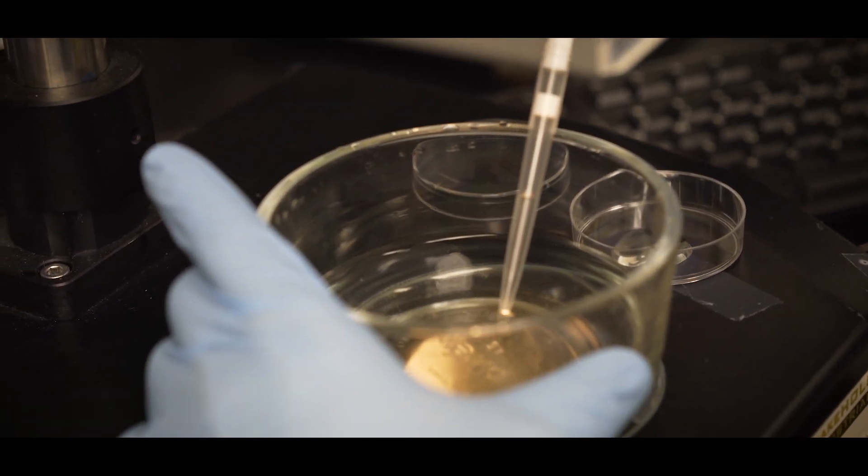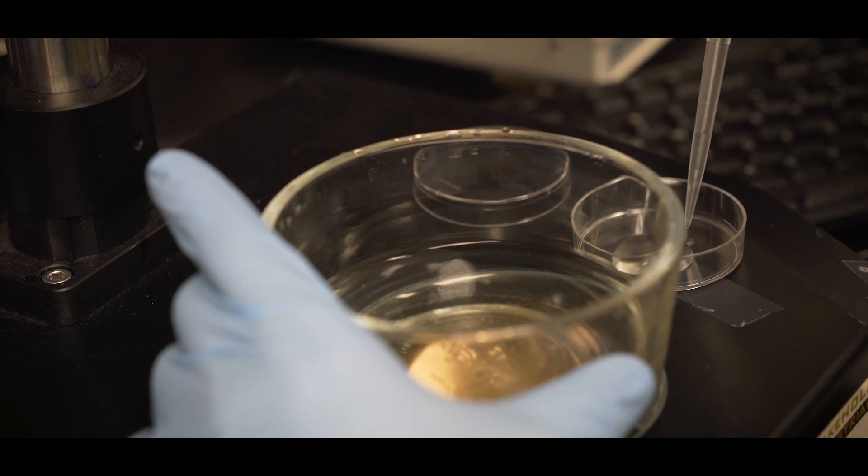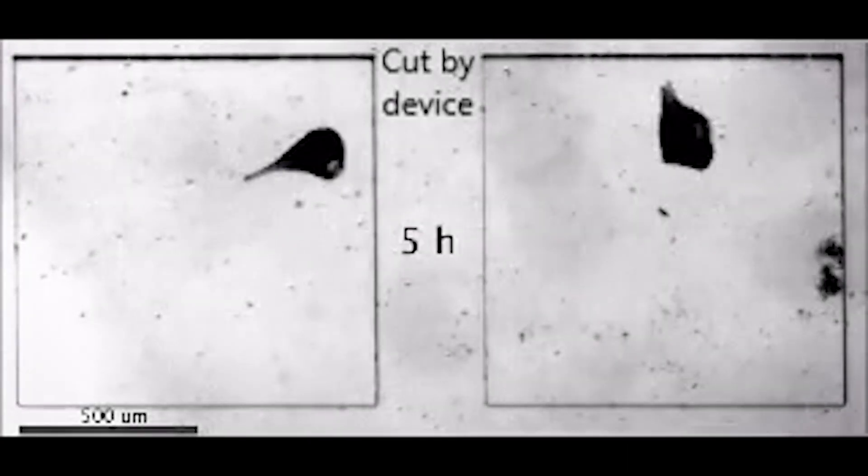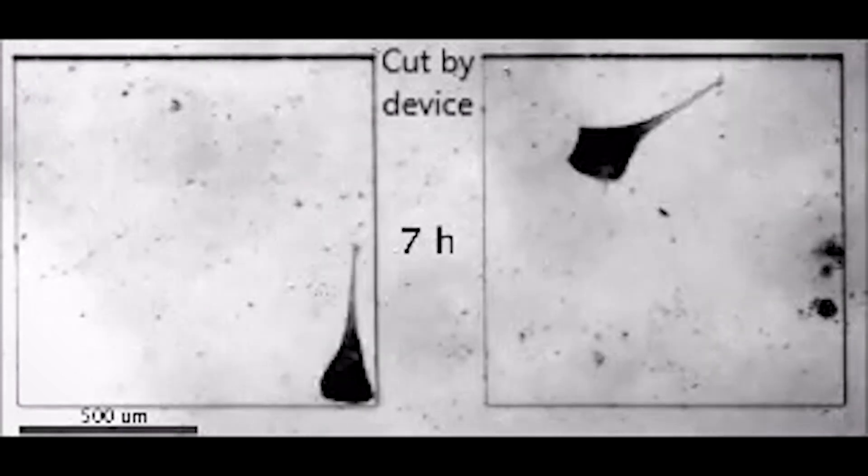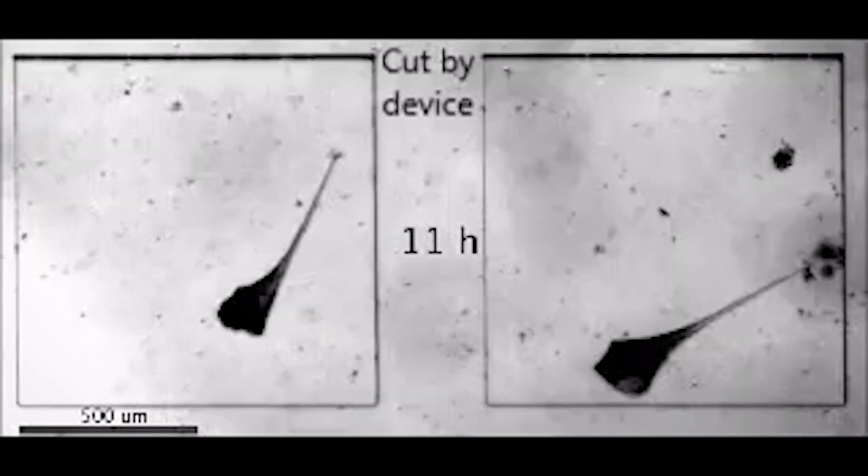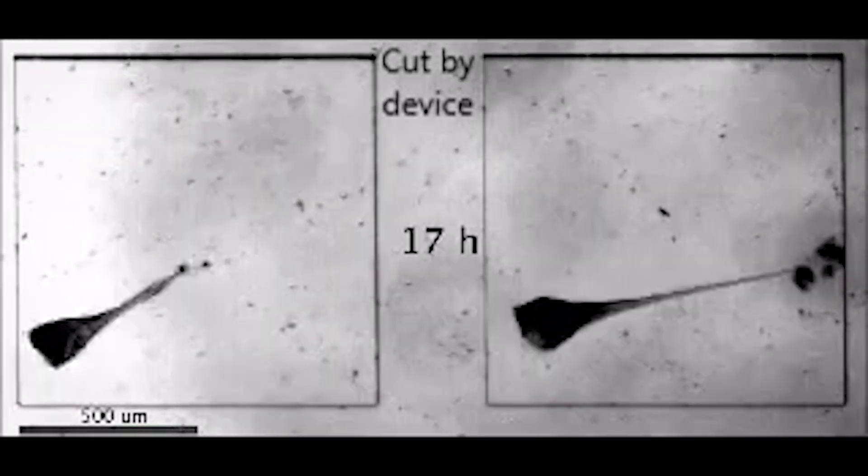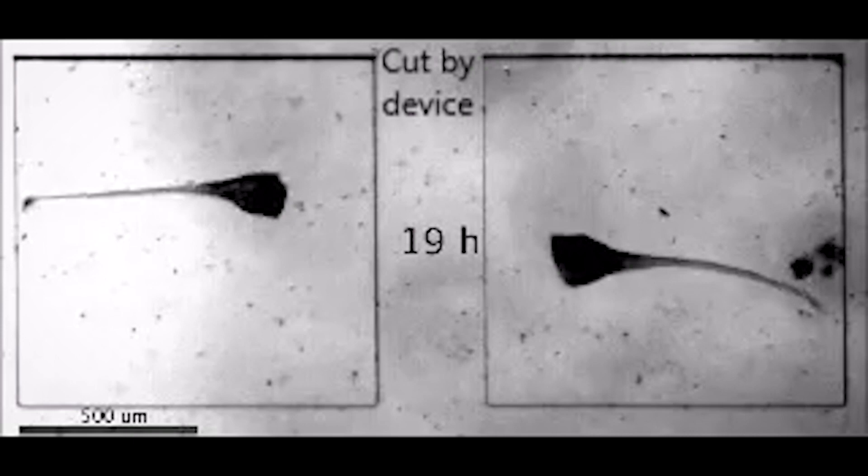We chose a cell called Stentor coeruleus which has an extraordinary ability to heal itself. If the cell is cut in half, each half can repair itself and regenerate all the missing organelles within 24 hours.